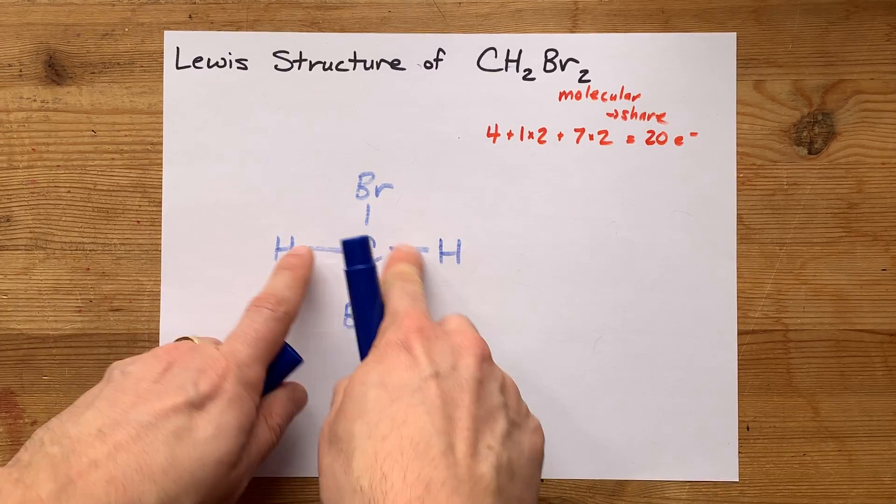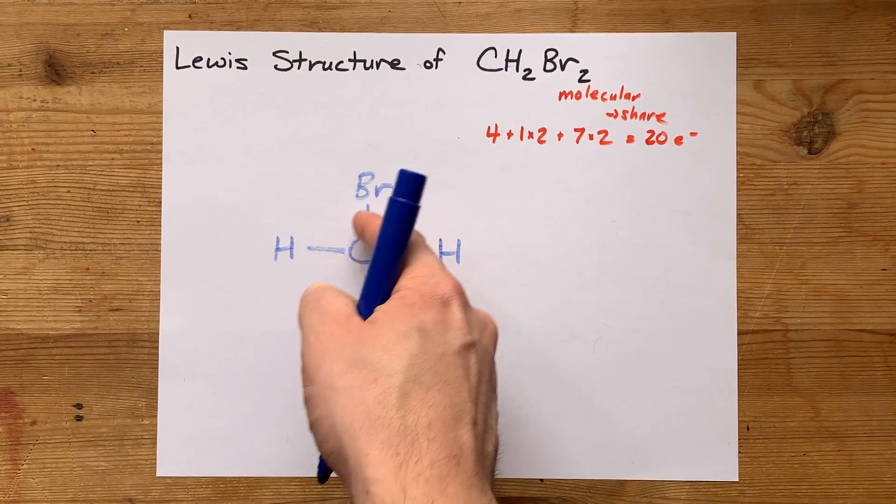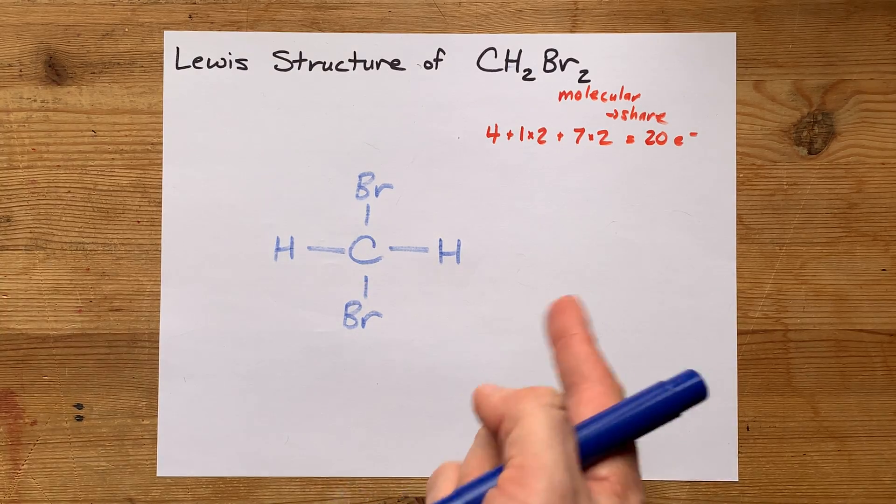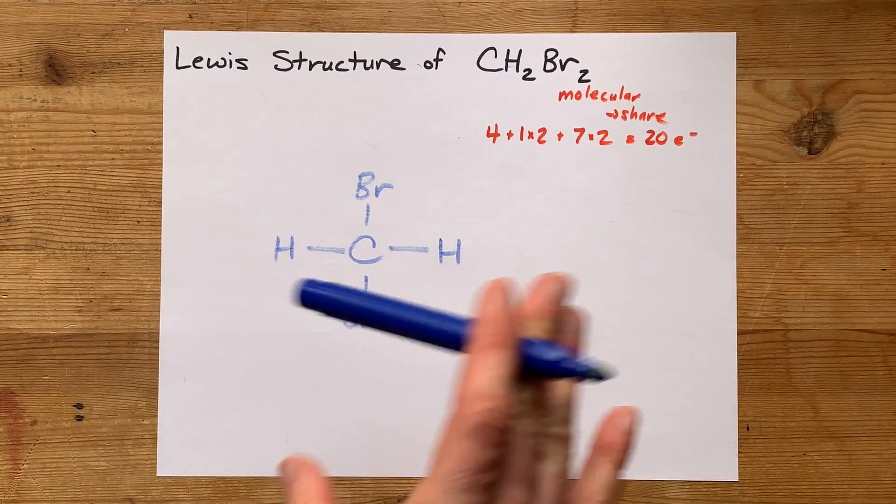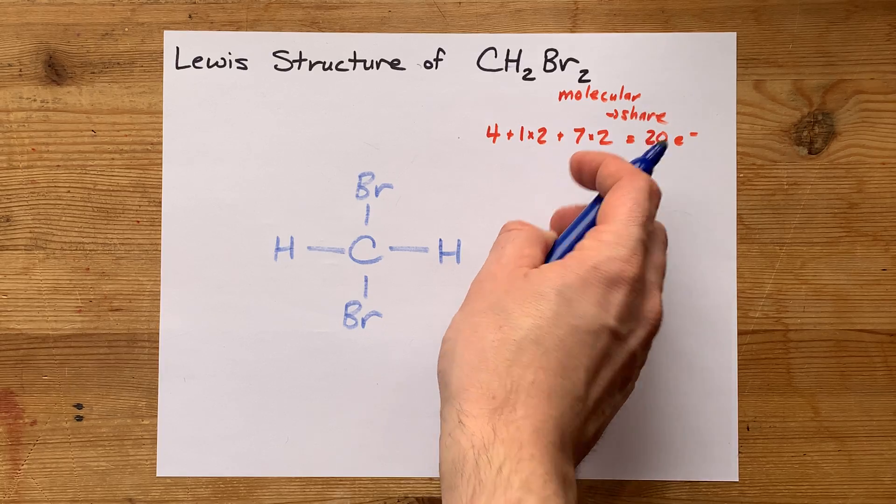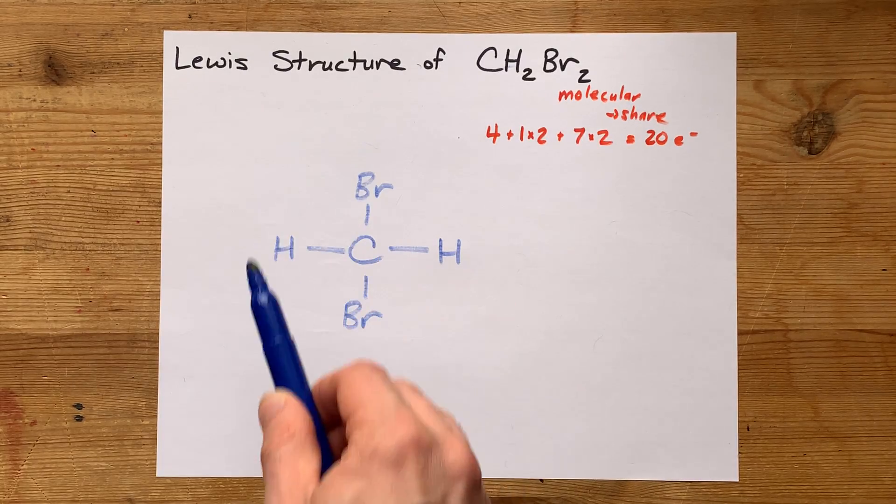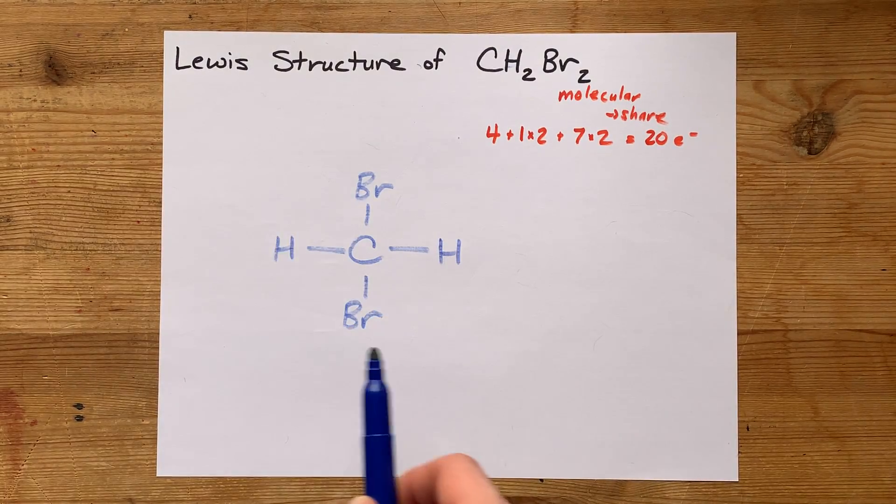Each of these single bonds is two electrons. So that's 2, 4, 6, 8 electrons that I've already dealt with. I need 20, and we're going to have to complete the octets of the outer atoms.